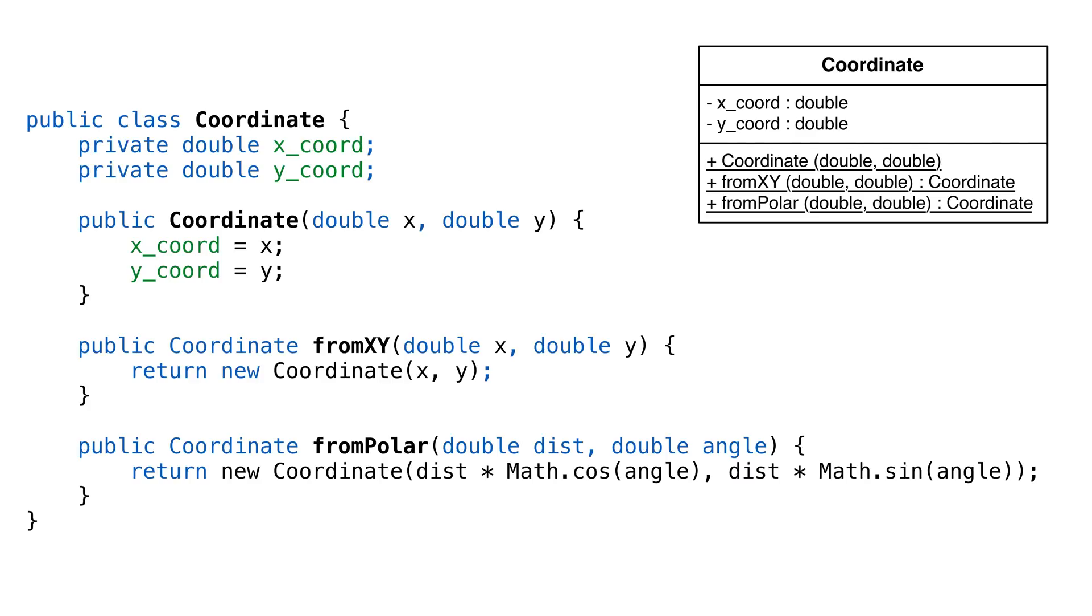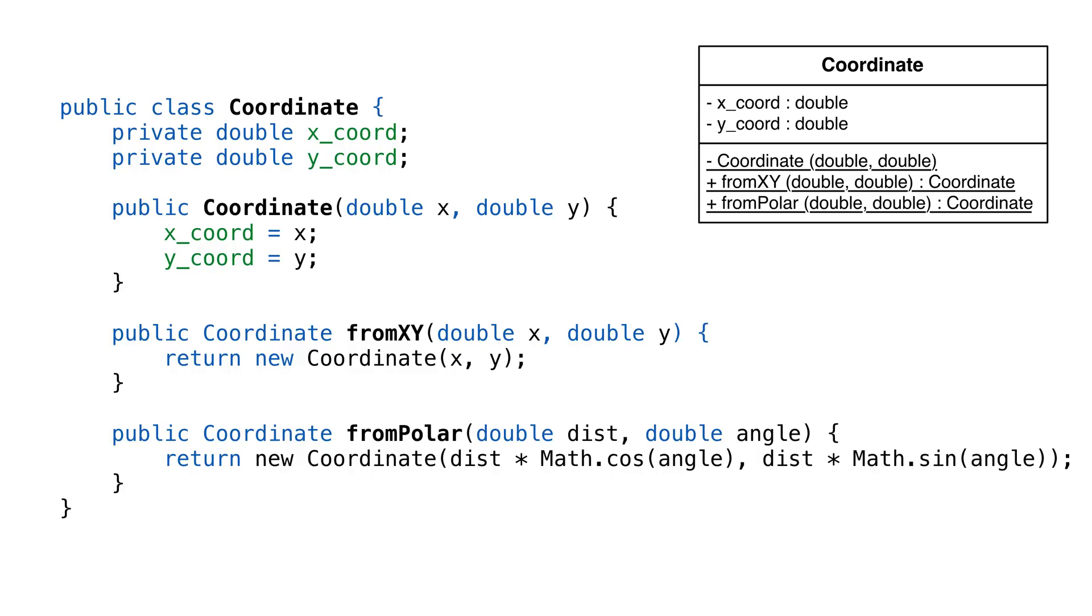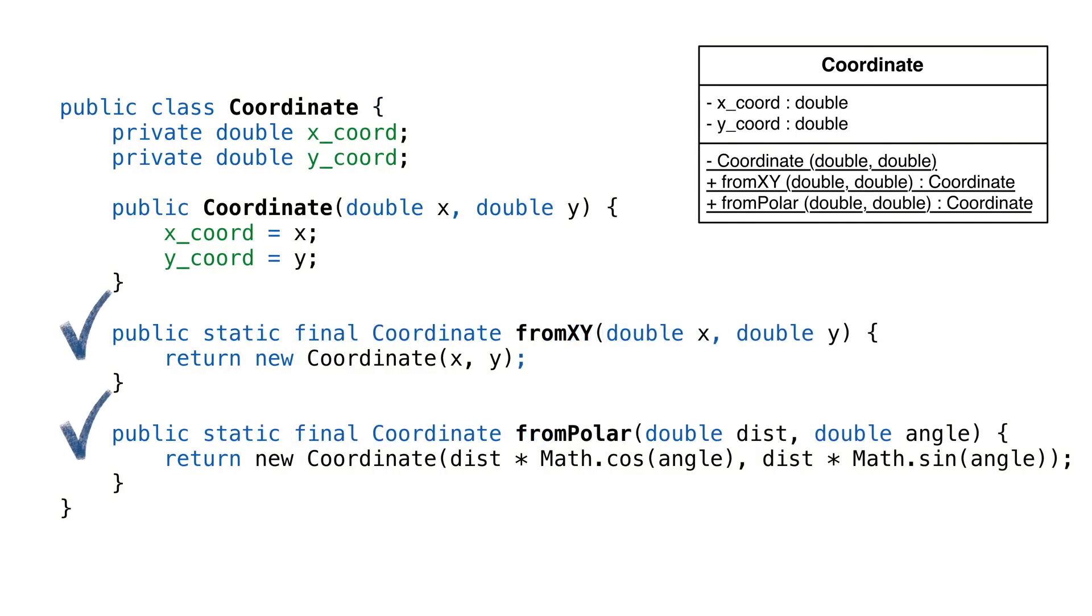Here's the rub. How do we call these methods if we need an instance to call the method? Yeah, that's right. Make the methods static. That's why they're called static factories.